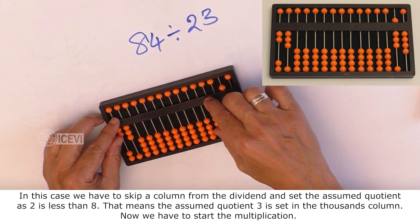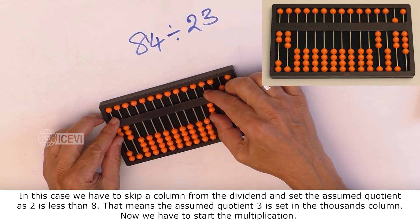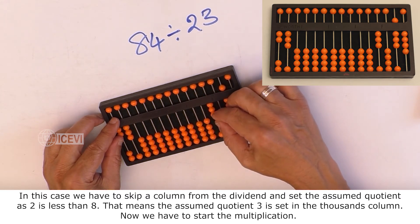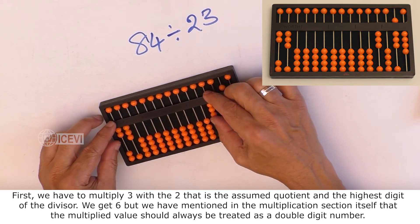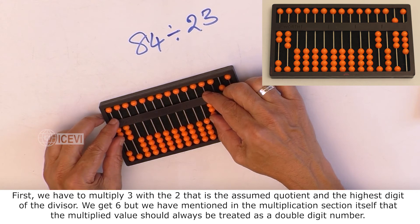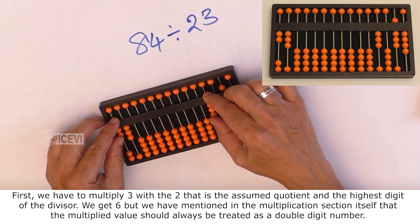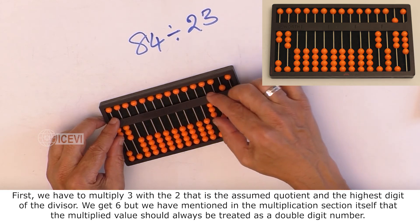Now we have to start the multiplication. First, we have to multiply 3 with 2, that is the assumed quotient and the highest digit of the divisor. We get 6, but we have mentioned in the multiplication section itself that the multiplied value should always be treated as a double digit number.